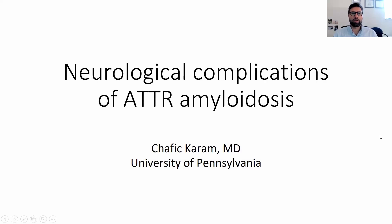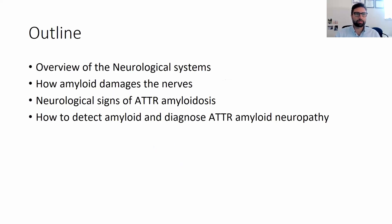Hello. We're going to talk today about the neurologic complications of ATTR amyloidosis. This is the outline: we're going to first talk a little bit about the neurological systems, discuss how amyloid damages the nerve, the neurological signs of ATTR amyloidosis, and how to detect and make the diagnosis of ATTR amyloid neuropathy.